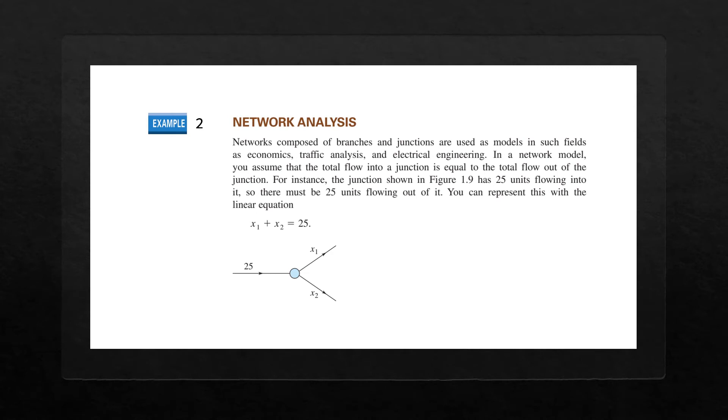The second example is about network analysis. Usually the networks are composed of branches and junctions, which are used as models in field of economics, traffic analysis, electrical engineering, and even in water flows. Suppose if 25 is the input and x1 and x2 are the output, then you'll have an equation, balanced equation, x1 plus x2, the output must be equal to the input. The same case, whether it is the water inflow or traffic flow, you have the same method, x1 here in this case, in this diagram, we have x1 plus x2 equal to 25.